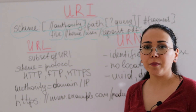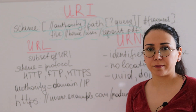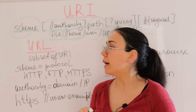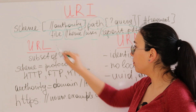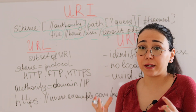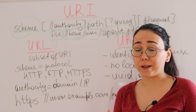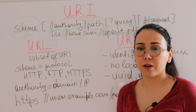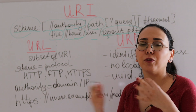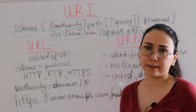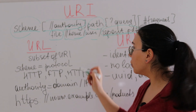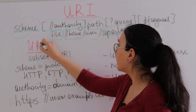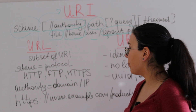URI can come in different forms. There are two subsets of it. The first subset is URL, which is what we normally refer to as links — web page links, 'can you follow this link,' and so on. So a URL is actually a subset of URI.